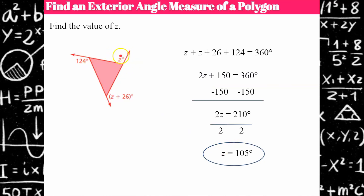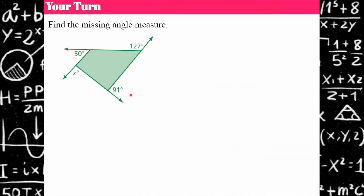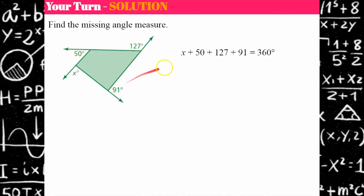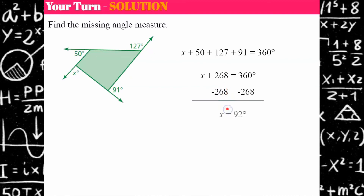So the exterior angle z is 105, and z + 26 = 131 for the second angle. Your turn — pause and write your equation to solve for the missing angle. Welcome back. x + 50 + 127 + 91 = 360. Combine like terms: x + 268 = 360. Subtract 268 from both sides — x equals 92 degrees.